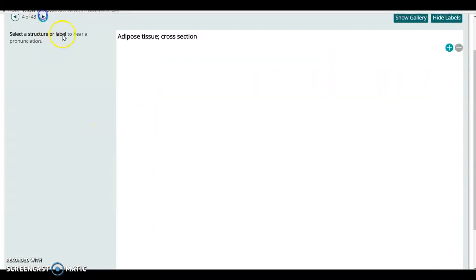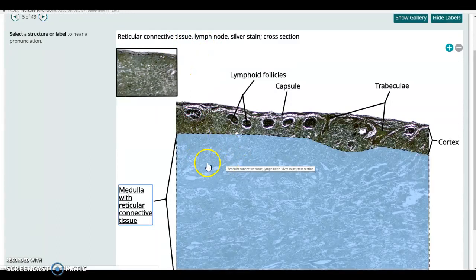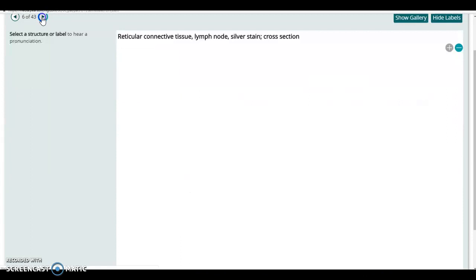This is now a lymph node. This is a reticular tissue, so it's mostly reticular collagen fibers that the cells are sitting on. You can see this really nicely in a much higher power view, which we'll see here.